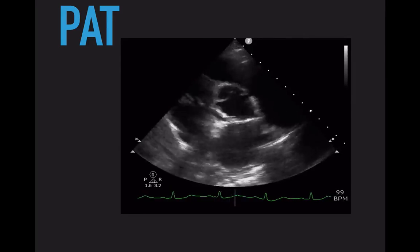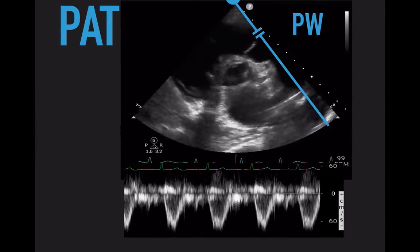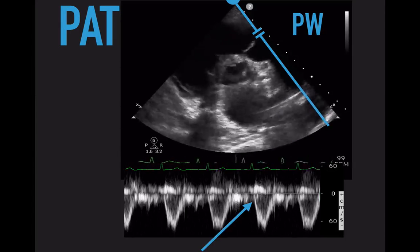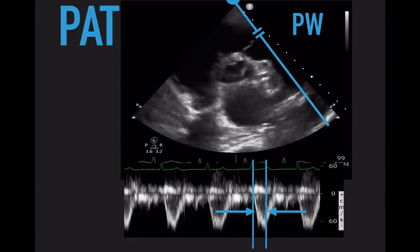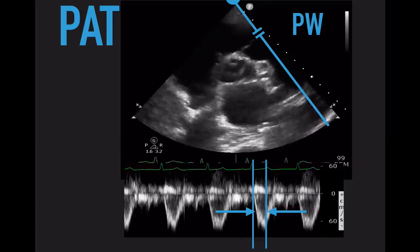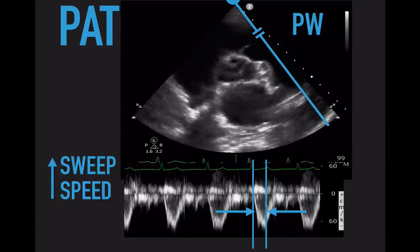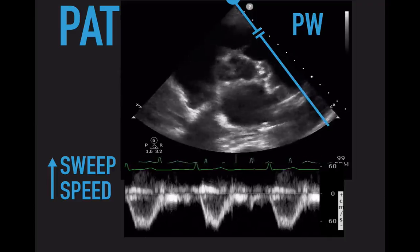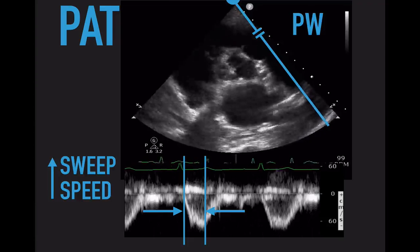Once you have your view, hit the pulse wave button and put the sample gate just on the RV side of the pulmonary valve, right in the middle. Hit pulse wave again and you end up with swaths of blood flow. You're going to measure from the beginning of the blood flow to the peak velocity — that time is your pulmonary acceleration time. If you increase your sweep speed as high as it'll go, it stretches out those swaths, making it much easier to measure from the beginning of flow to the peak.